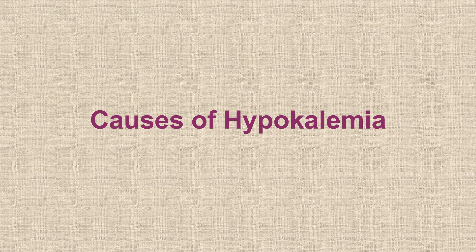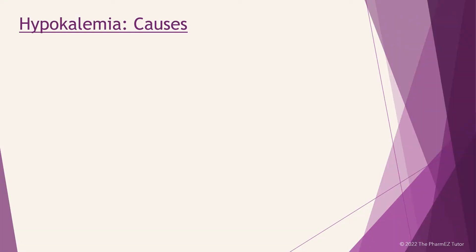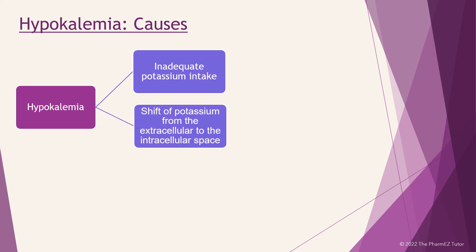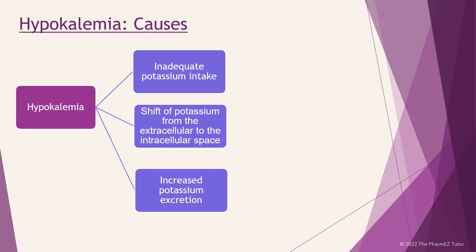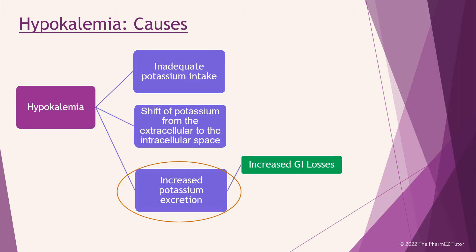Let's go over the causes of hypokalemia. The cause of hypokalemia is usually apparent from the history and physical examination. Hypokalemia may result from inadequate potassium intake, a shift of potassium from the extracellular to the intracellular space, or increased potassium excretion. Hypokalemia due to poor or decreased intake is rare. An intracellular shift by itself is a distinctly uncommon cause. Increased potassium excretion is the most common mechanism, most commonly due to increased GI losses, drugs, and polyuria.